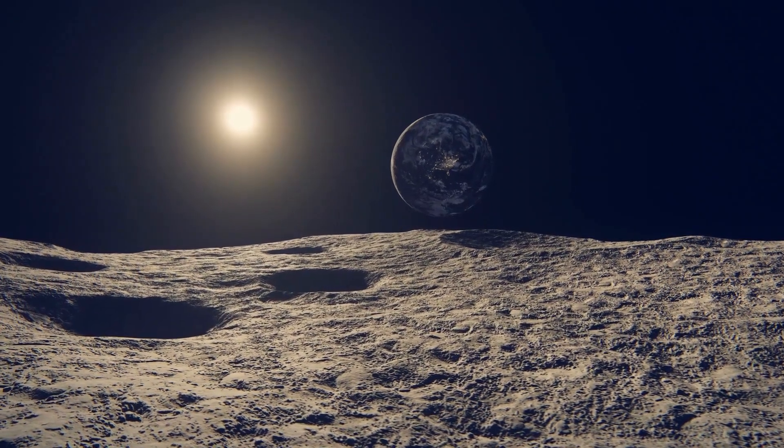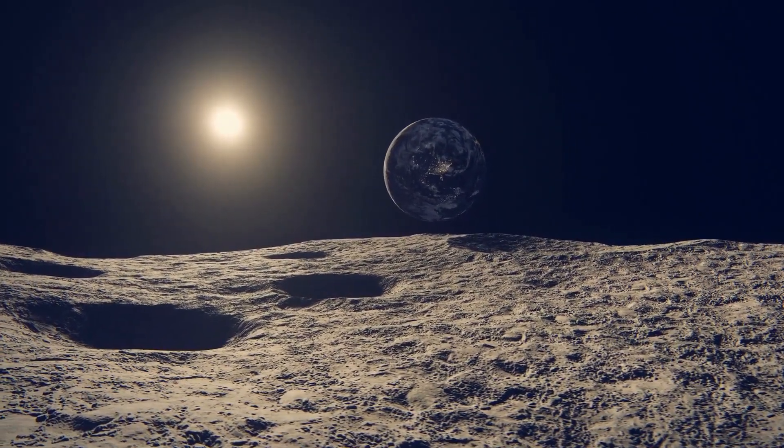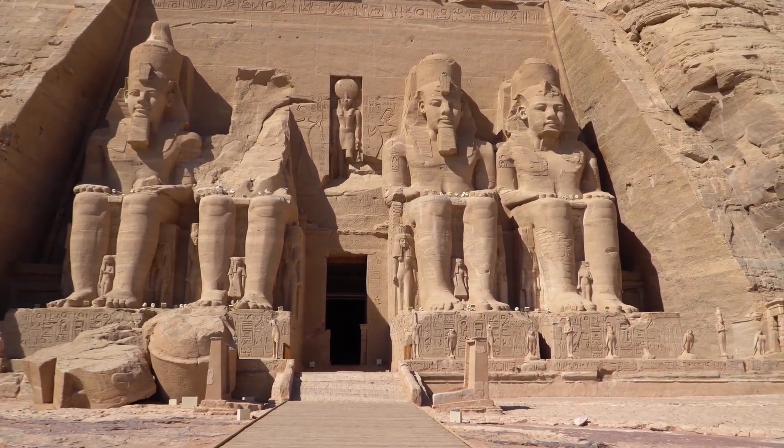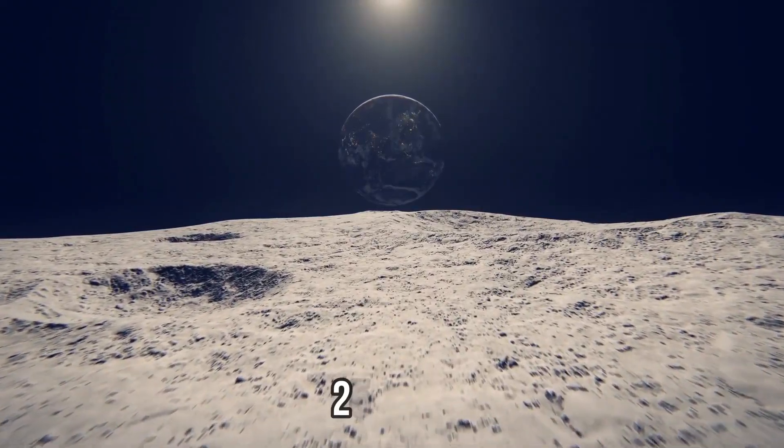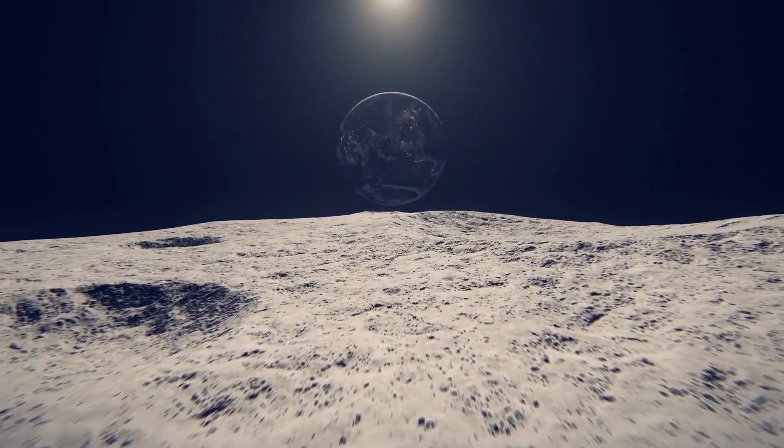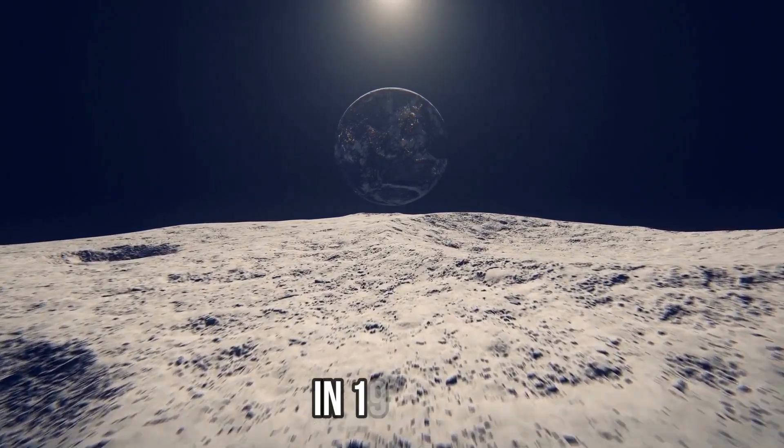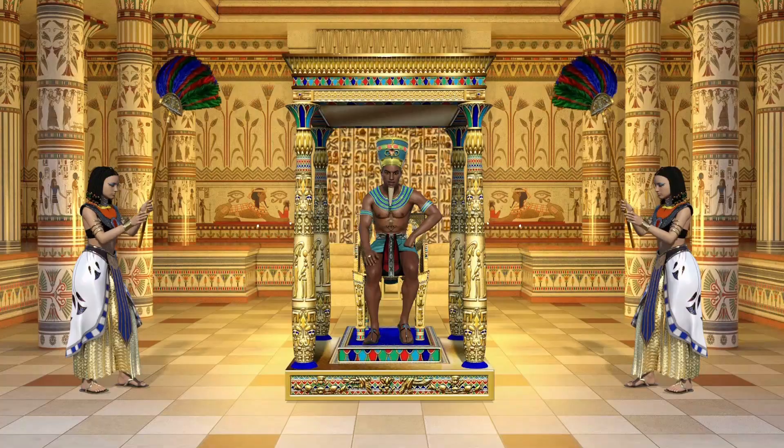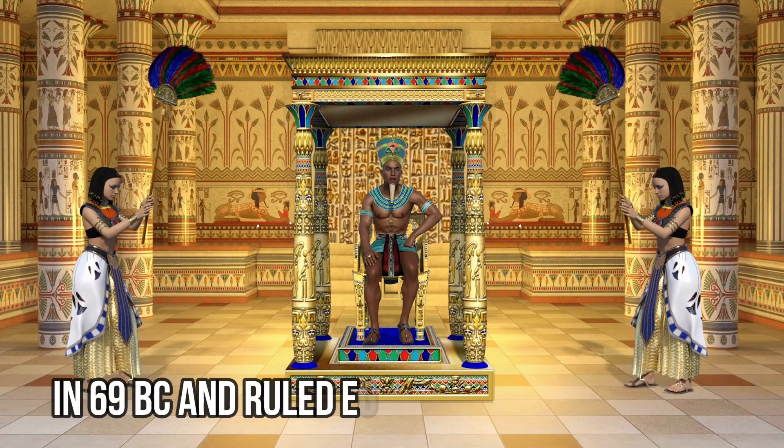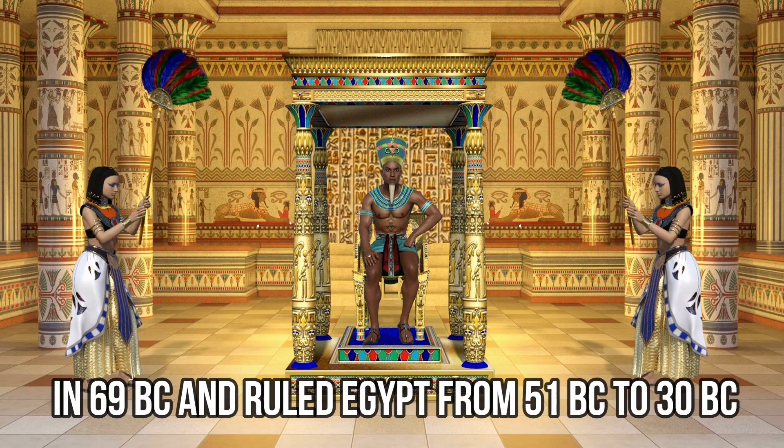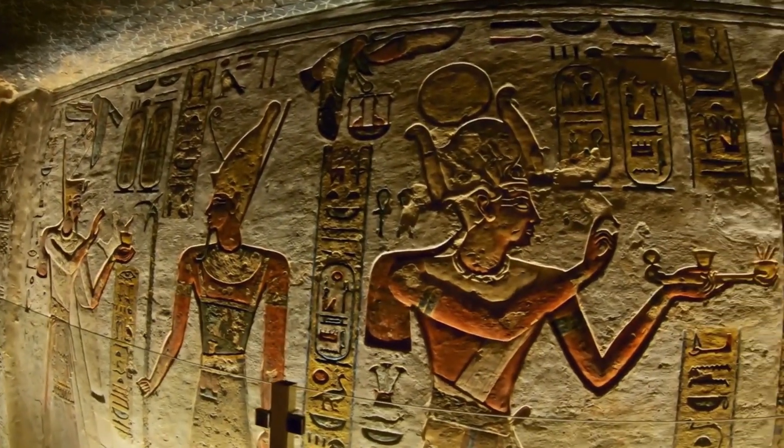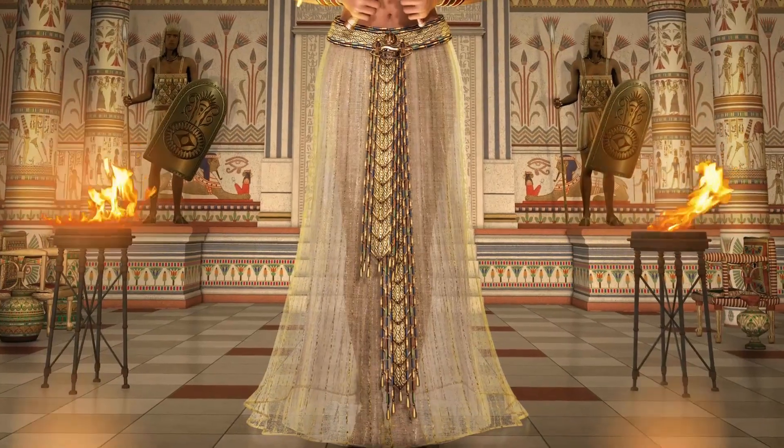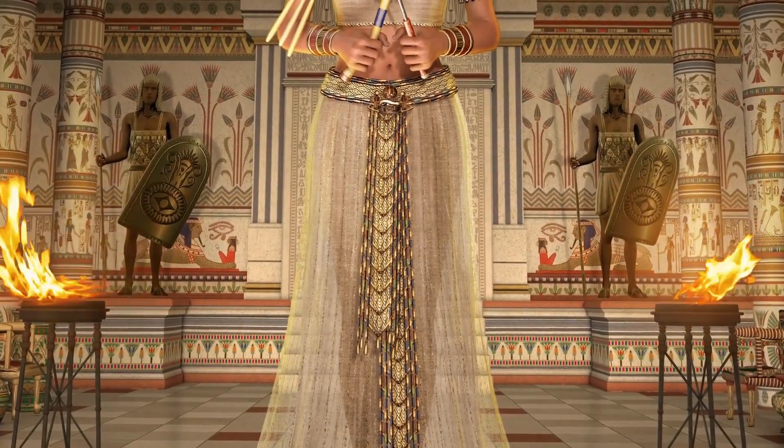her life is closer in time to the moon landings than to the construction of the pyramids. The pyramids of ancient Egypt are some of the oldest and most famous structures in the world, and they were built about 2500 BC. In comparison, the moon landing took place in AD 1969, which was more than 4,000 years later. Cleopatra was born in 69 BC and ruled Egypt from 51 BC to 30 BC. She is most famous for her relationships with Roman leaders Julius Caesar and Mark Antony, and she is considered one of the most powerful and influential women in all of human history.